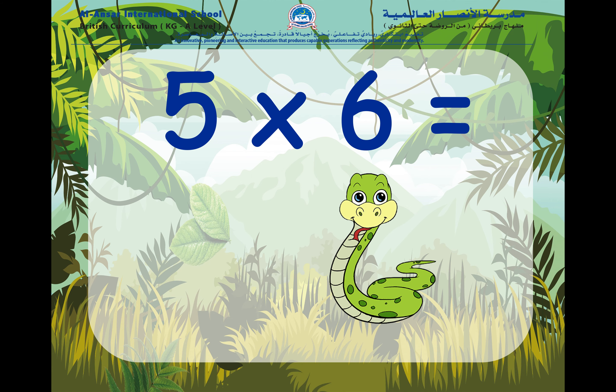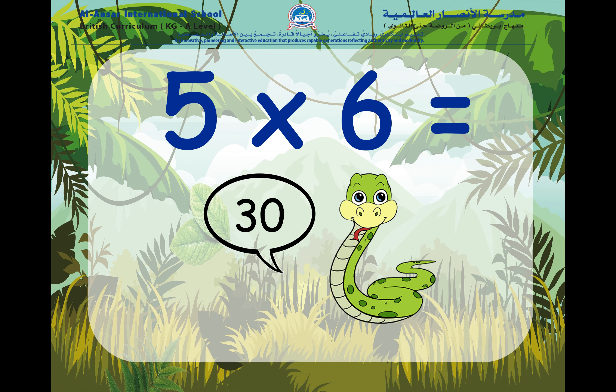Five times six. Remember, here we have six groups of five, so we can say five times six is thirty.